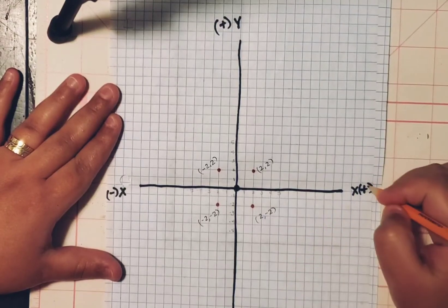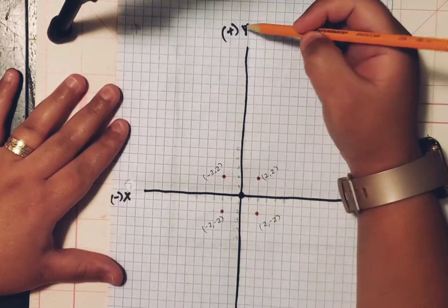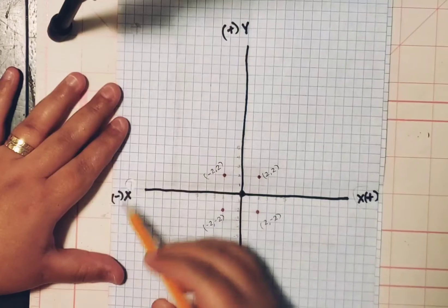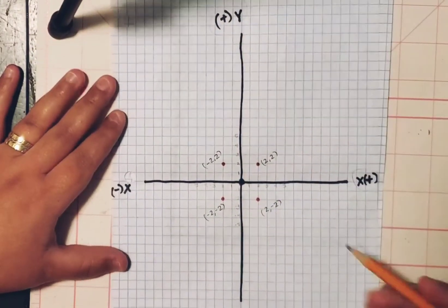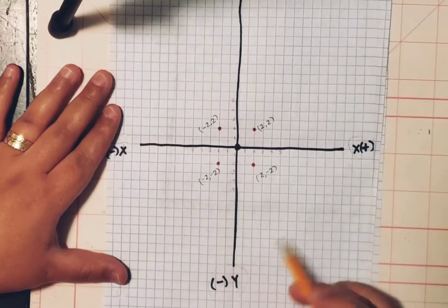Right hand side X is always going to be positive. This one is always going to be negative. And going up on your Y, it's always going to be positive. And going down on your Y, it's going to be negative.